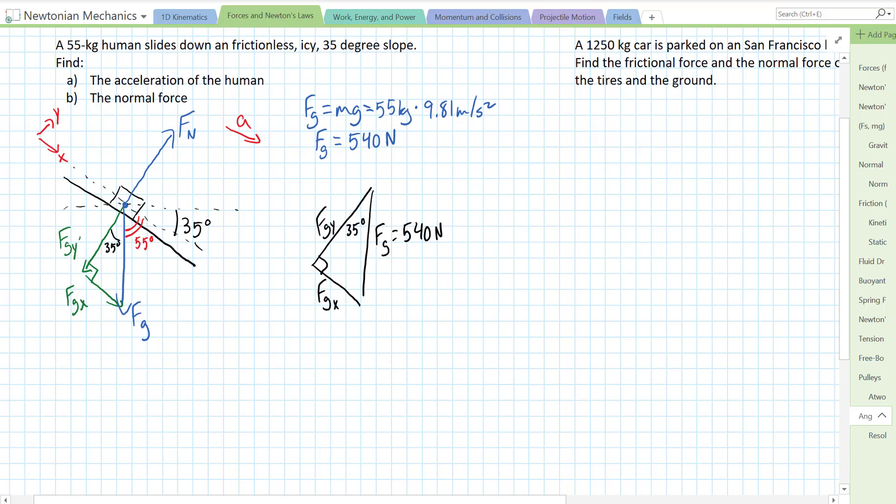So, in order to get fgy, we have to use a trig function. Since we know the hypotenuse, and fgy is adjacent to the angle, we're going to use cosine. Cosine of theta, 35 degrees, is equal to adjacent over hypotenuse. So, fgy over 540 newtons. We solve that. That becomes, fgy equals 540 newtons times cos of 35 degrees.